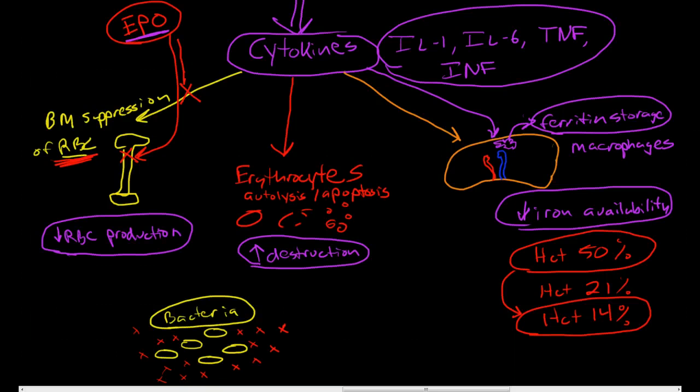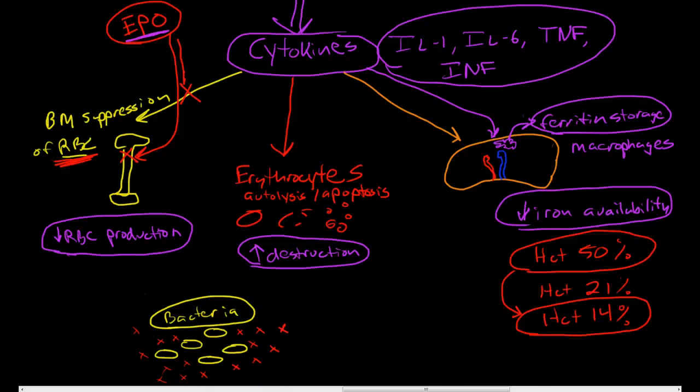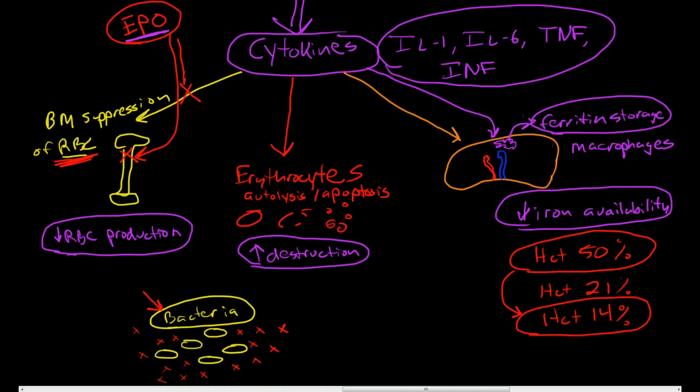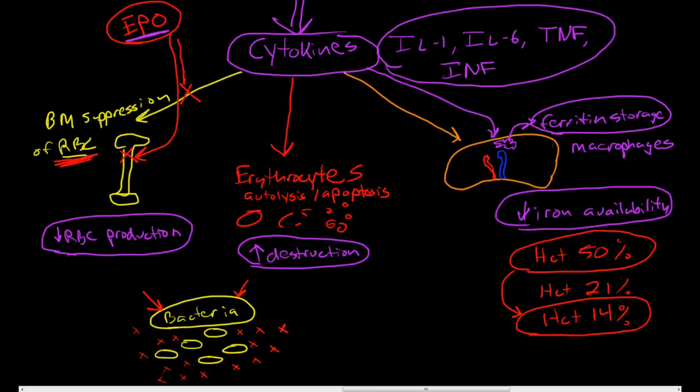We don't need as high of a crit as we have, and our body is quite aware of that. But the bacteria desperately needs the iron to survive. So one of the ways that the body has adapted to preventing the growth of bacteria is by robbing the bacteria of iron.